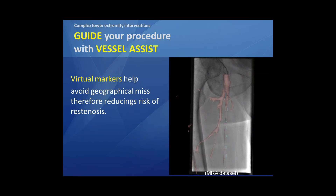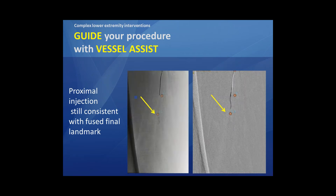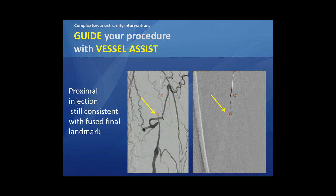These dots are also extremely helpful, as I've already mentioned, to avoid geographical misses. As you can see here, we know that this is a problem with drug-coated balloons. When you have these numbered dots, it's impossible to have a geographical miss. This is, for me, an important tool and an important advantage over earlier days.